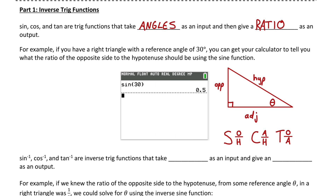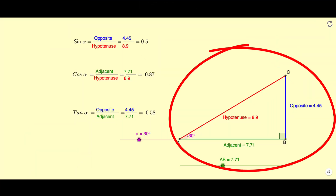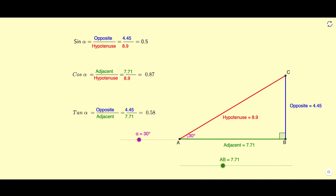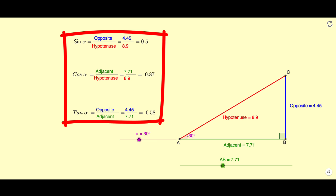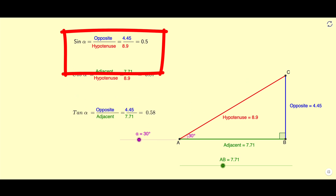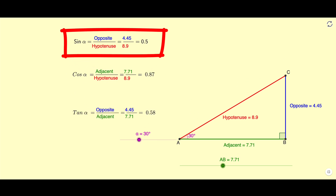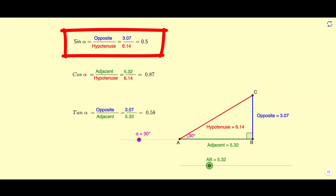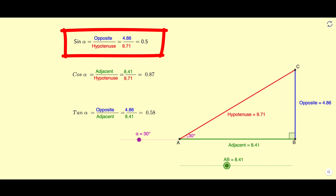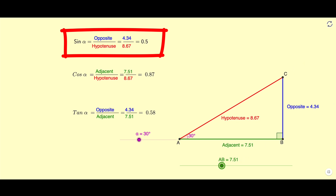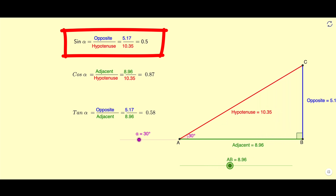Let me show you in GeoGebra what I mean. Notice I have a right angle triangle with a reference angle of 30 degrees. It has the opposite, adjacent, and hypotenuse side lengths labeled, with the ratios calculated on the left. The sine ratio of that reference angle of 30 is 0.5. If I make this triangle bigger or smaller without changing any of the angles, the side lengths change but those ratios stay the same — the sine ratio is 0.5 for all of these.